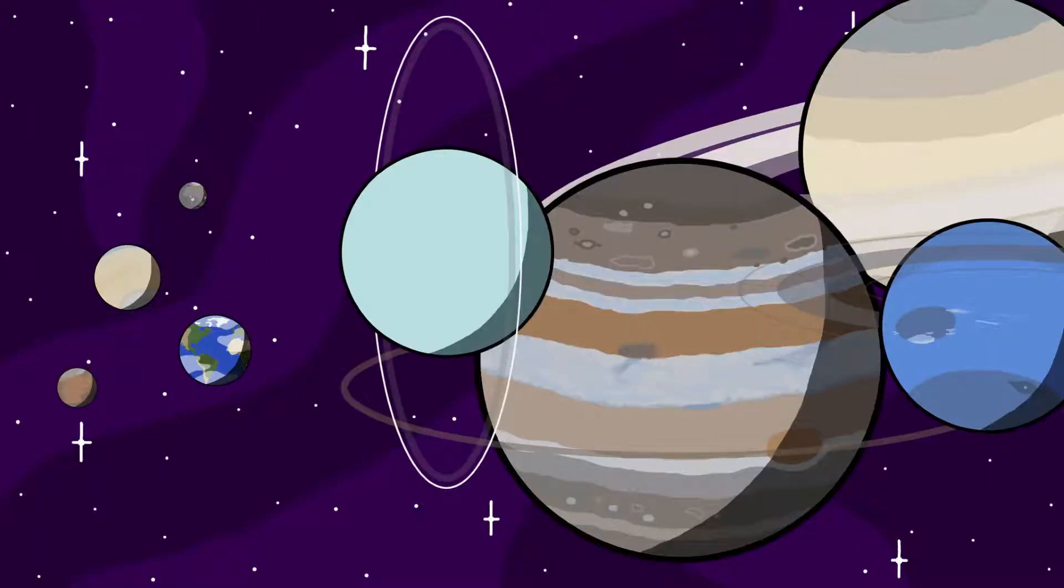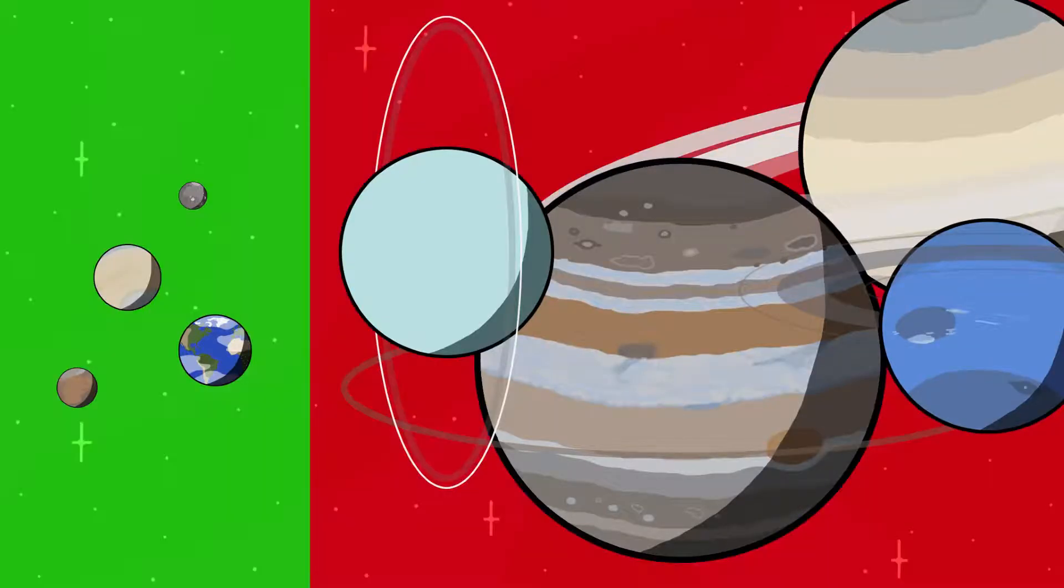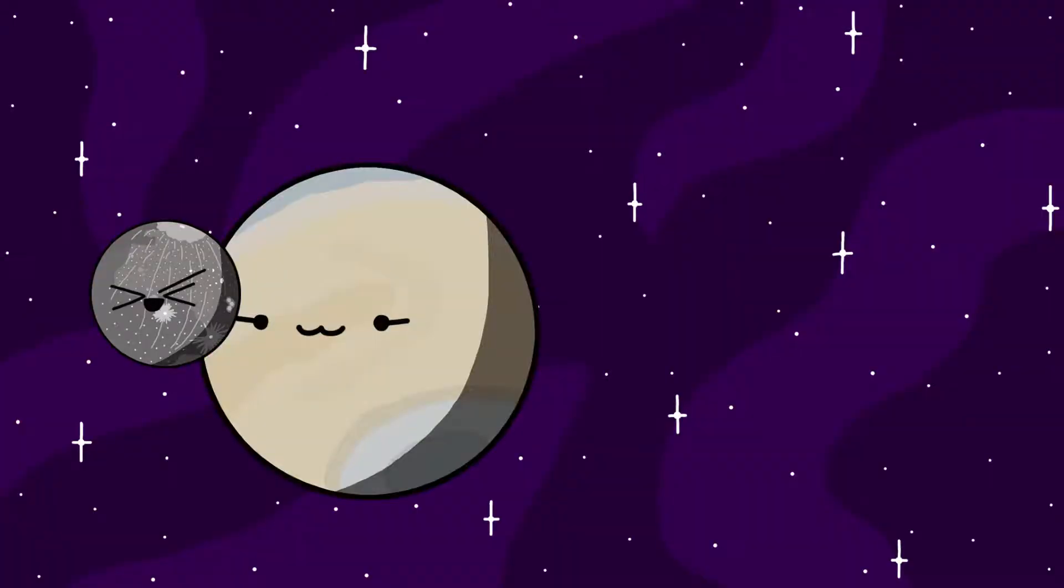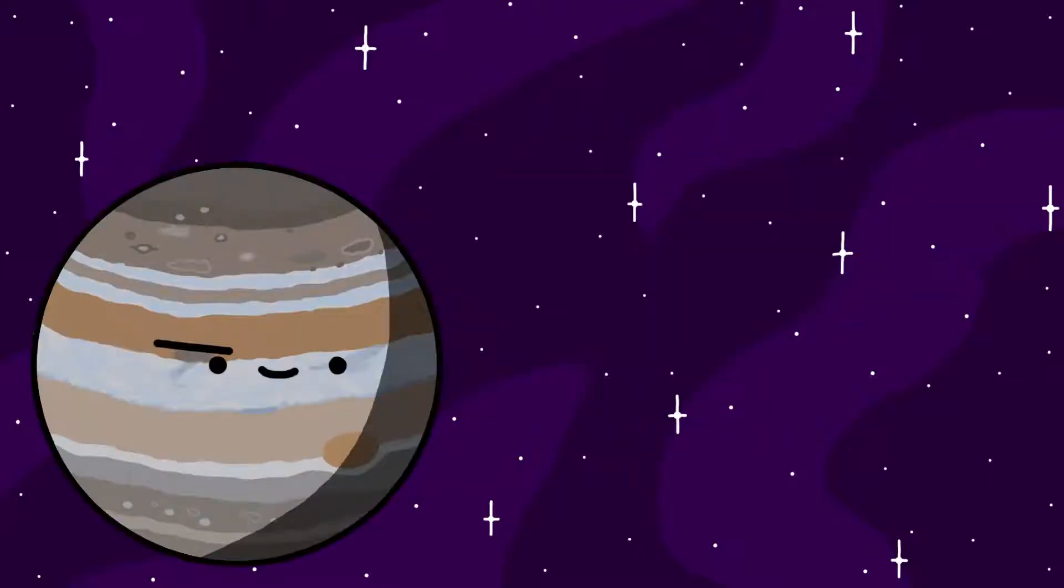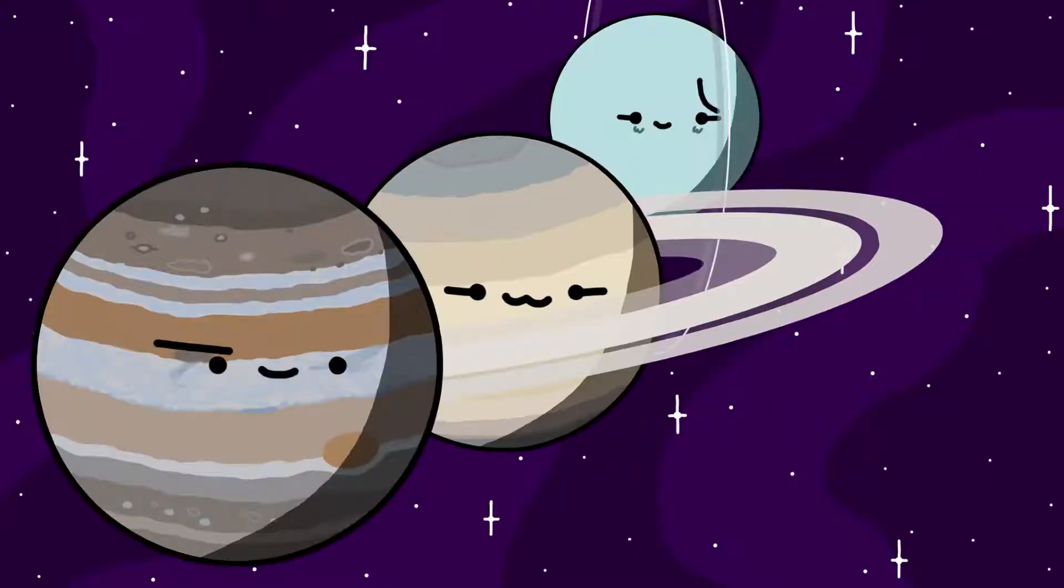The eight planets are divided into two types: the inner planets - Mercury, Venus, Earth, and Mars - and the outer planets - Jupiter, Saturn, Uranus, and Neptune.